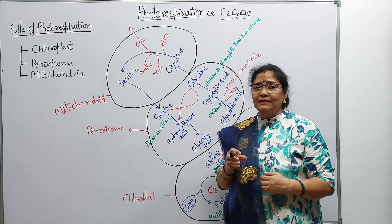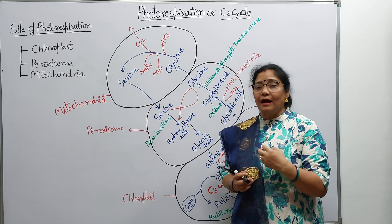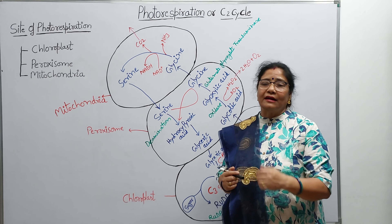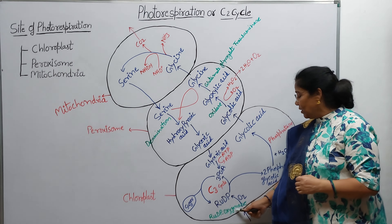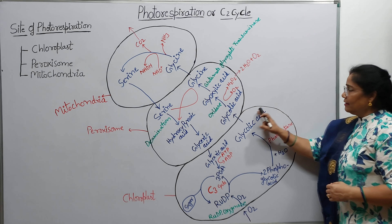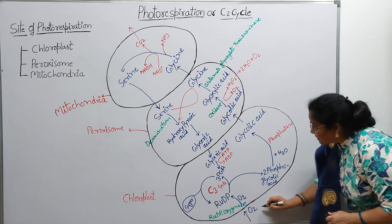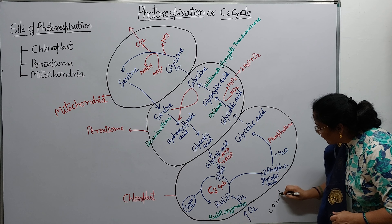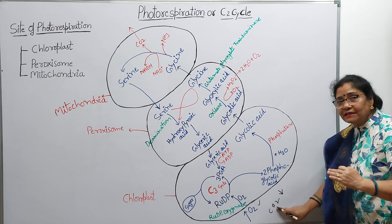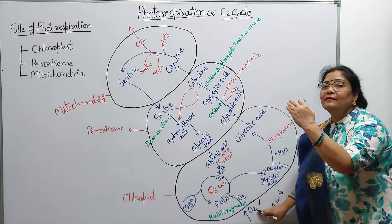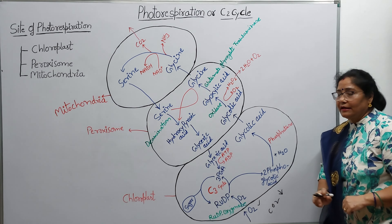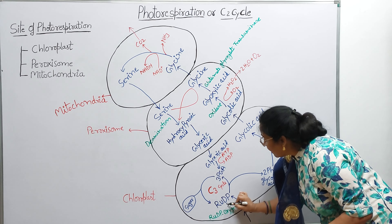Carbon dioxide se judne ki property zyada hoti hai, oxygen se kam hoti hai. Lekin yadi atmosphere mein carbon dioxide ka concentration kam ho jata hai, tab yeh oxygenation karne lagta hai aur enzyme ka naam hota hai RUDP oxygenase. Maane lete hain ki cell ka chloroplast — carbon dioxide ka concentration atmosphere mein ghadh gaya hai aur oxygen ka concentration badh gaya hai.